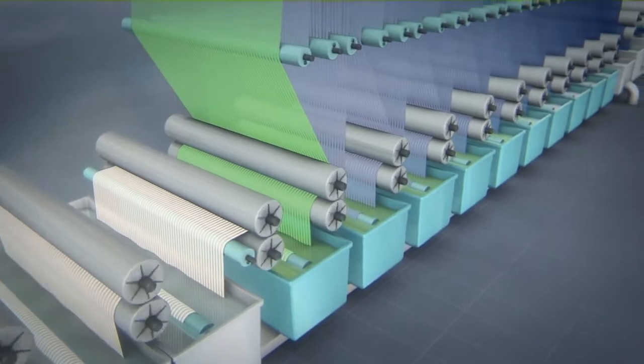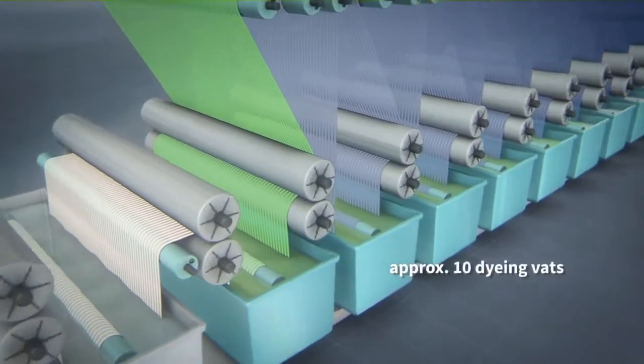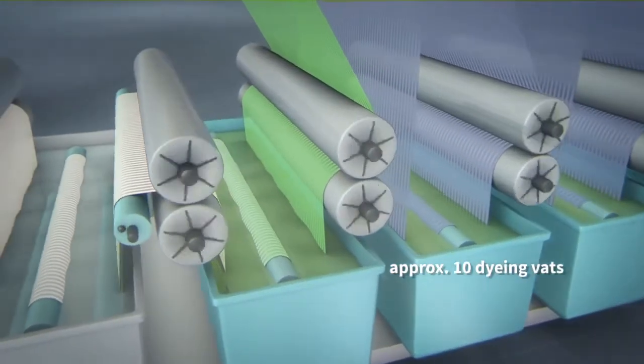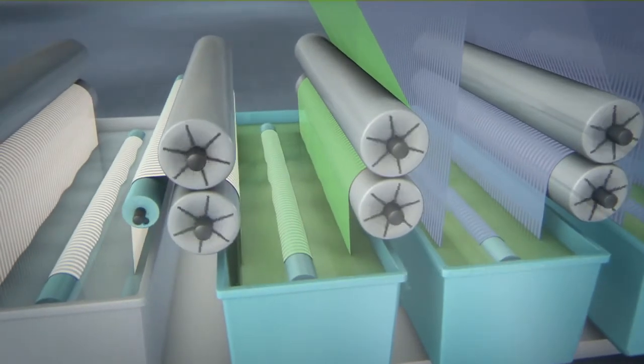Now the actual dyeing process begins with an average of 10 dyeing vats. The yarn fibers are immersed in the first indigo dyeing box.